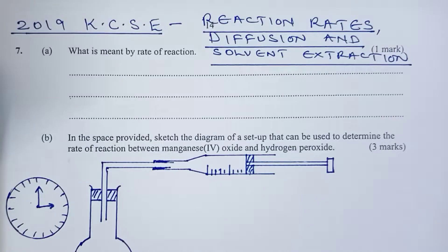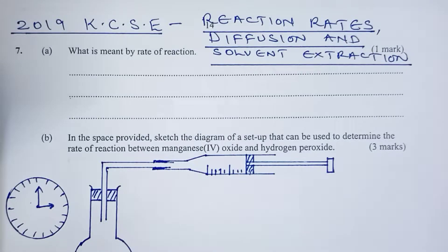Greetings from the Kenyan teacher. It is our pleasure to present 2019 KCSE chemistry paper 2, question number 7. Question 7 tested our candidates on the understanding of reaction rates, diffusion, and solvent extraction.